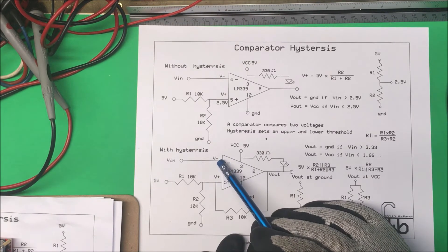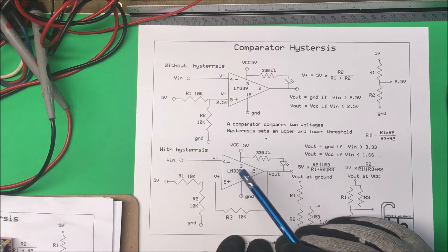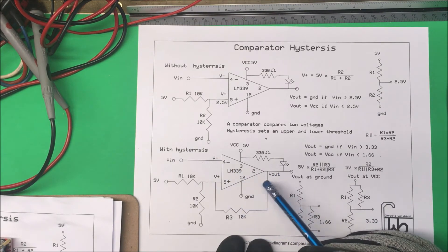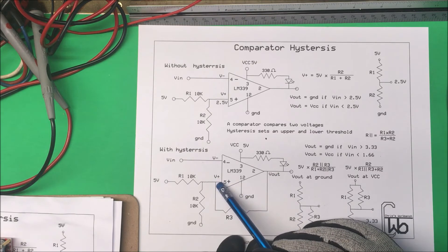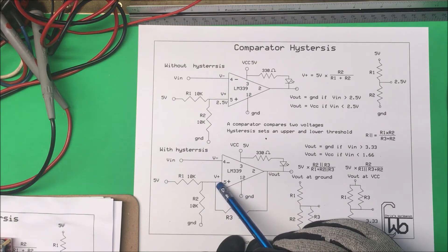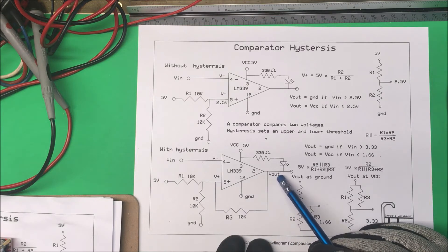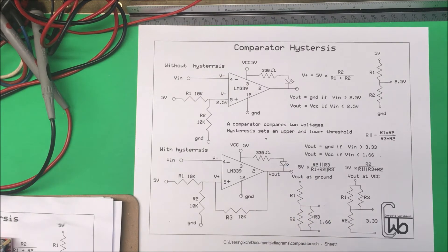So if this pin here is greater than 3.3 volts, then this is going to go to ground and it's going to stay there until we drop below 1.66 volts down here. And when it goes to 1.66, this is going to go to the rail voltage to 5 volts and the LED is going to turn off. So that's all there is to adding hysteresis to it.